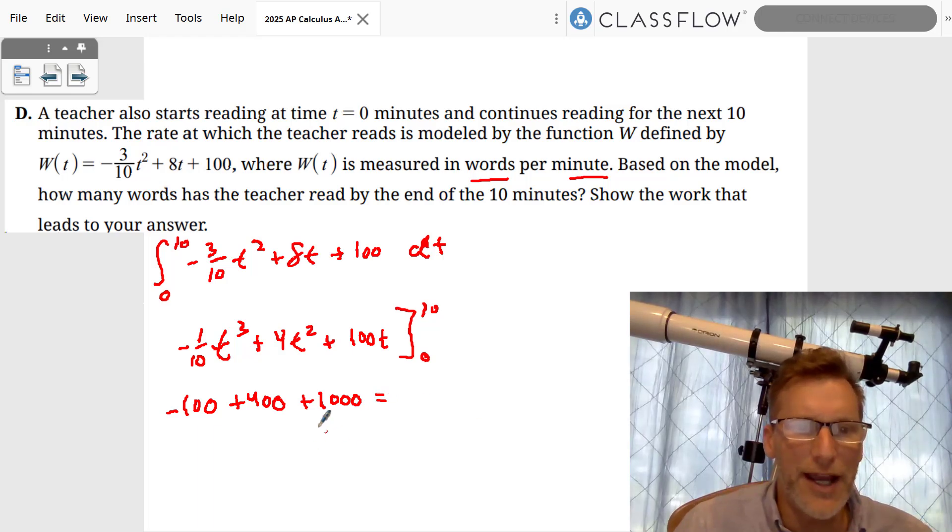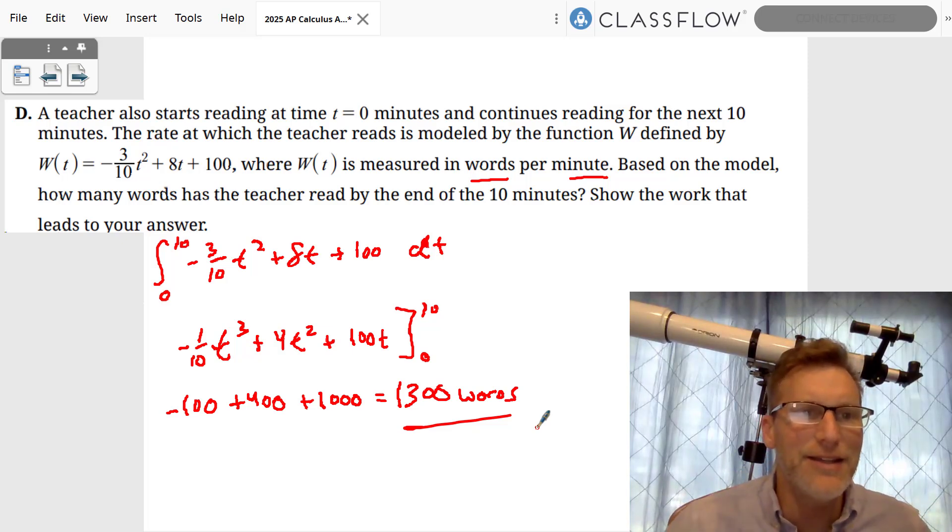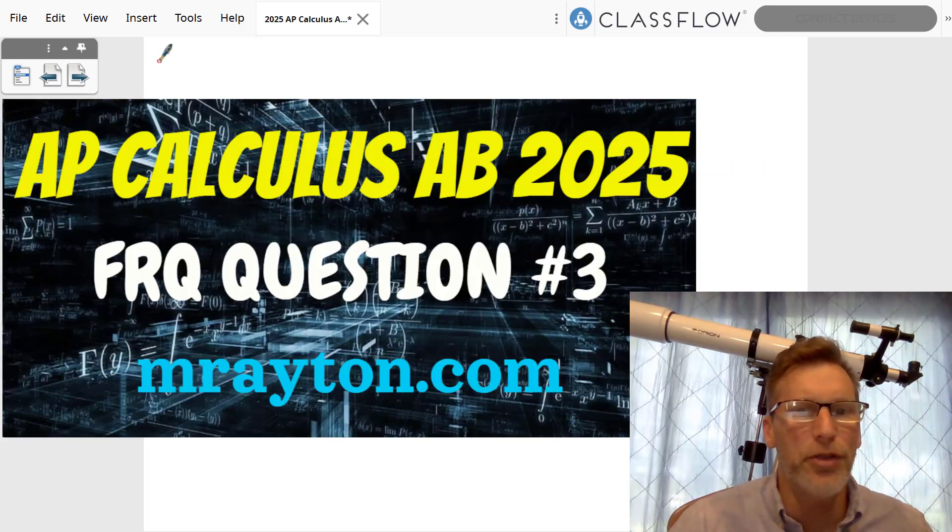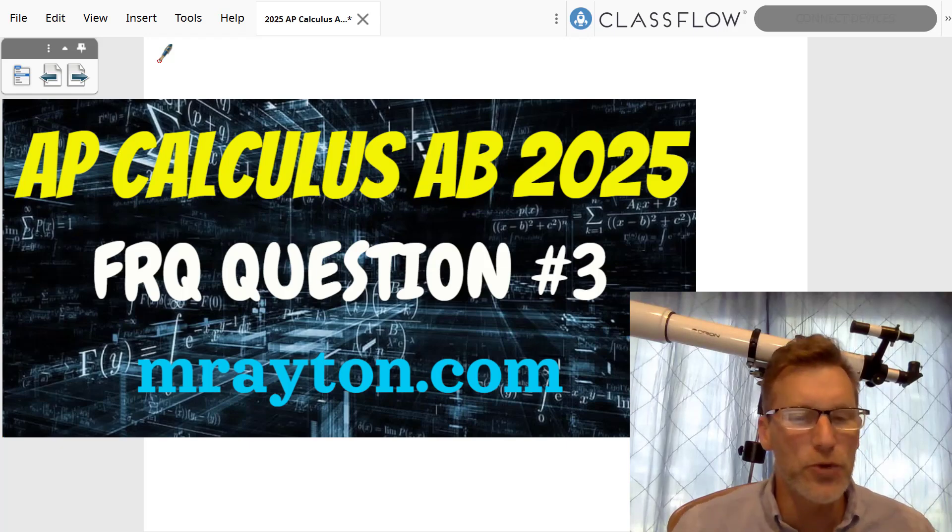10 squared is 100 times 4 is 400, and then 10 times 100 is 1,000. And we add this up: negative 100 plus 400 is 300, plus 1,000 is 1,300 words using an integral right there. And that is question number three for the AP Calc 2025 exam. Hope that helped! Talk to you soon.